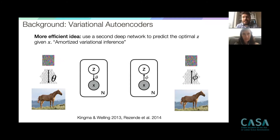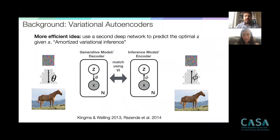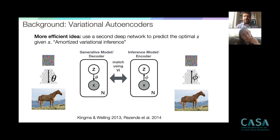Now you have two networks: the decoder (going from z to x) and an encoder network phi (going from x to z) that takes your image and predicts a latent variable z. These two networks are trained jointly using amortized variational inference — hence the name 'variational autoencoders.' They are called autoencoders because you can go from a horse image to the noise vector and back to the horse image, reducing and then expanding dimensionality in a closed loop.